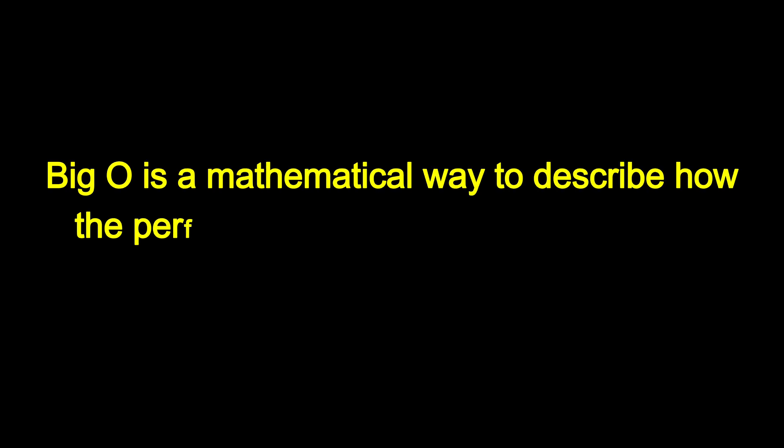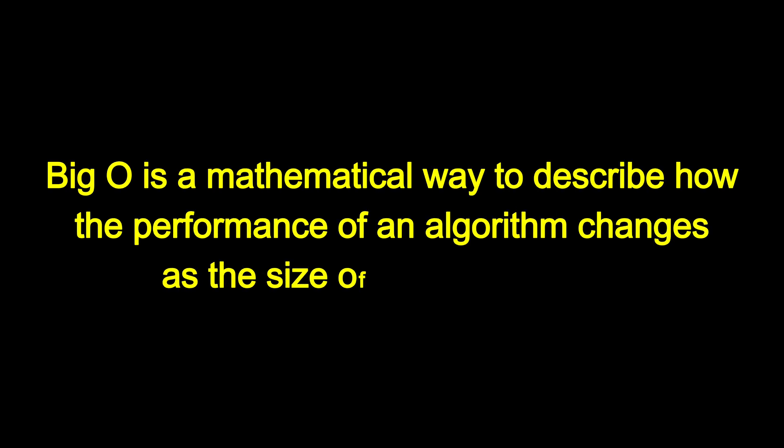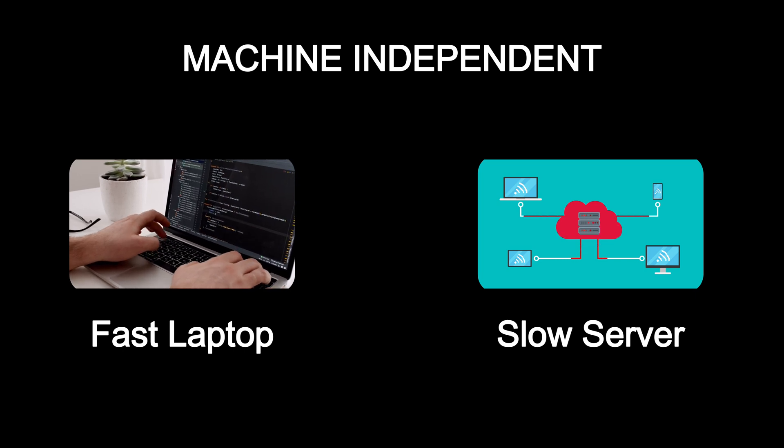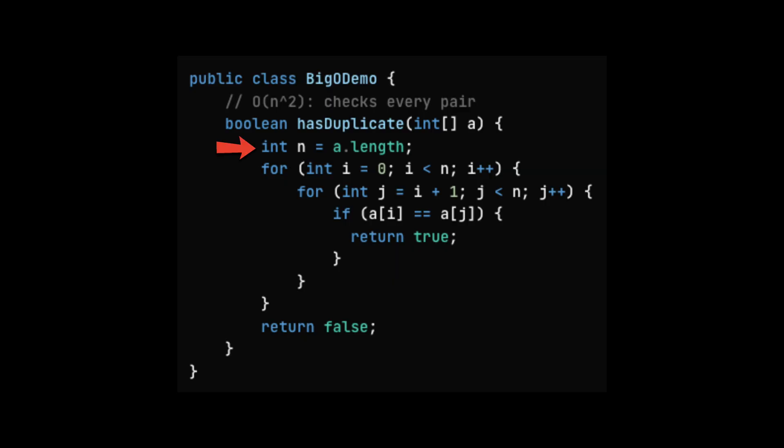So what exactly is Big O Notation? Big O is a mathematical way to describe how the performance of an algorithm changes as the size of the input grows. It doesn't tell you the exact time your code will take. Instead, it gives you a high level growth trend. One important thing to note is that Big O is machine independent. It doesn't matter whether your code runs on a fast laptop or a slow server. The growth pattern stays the same.